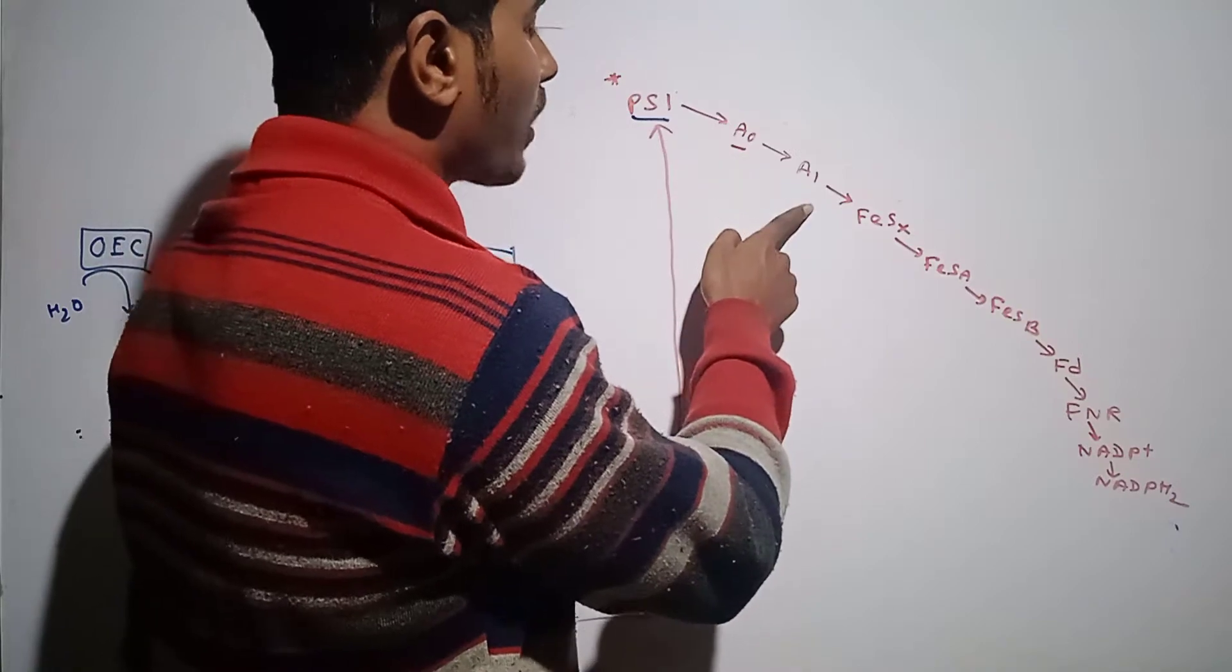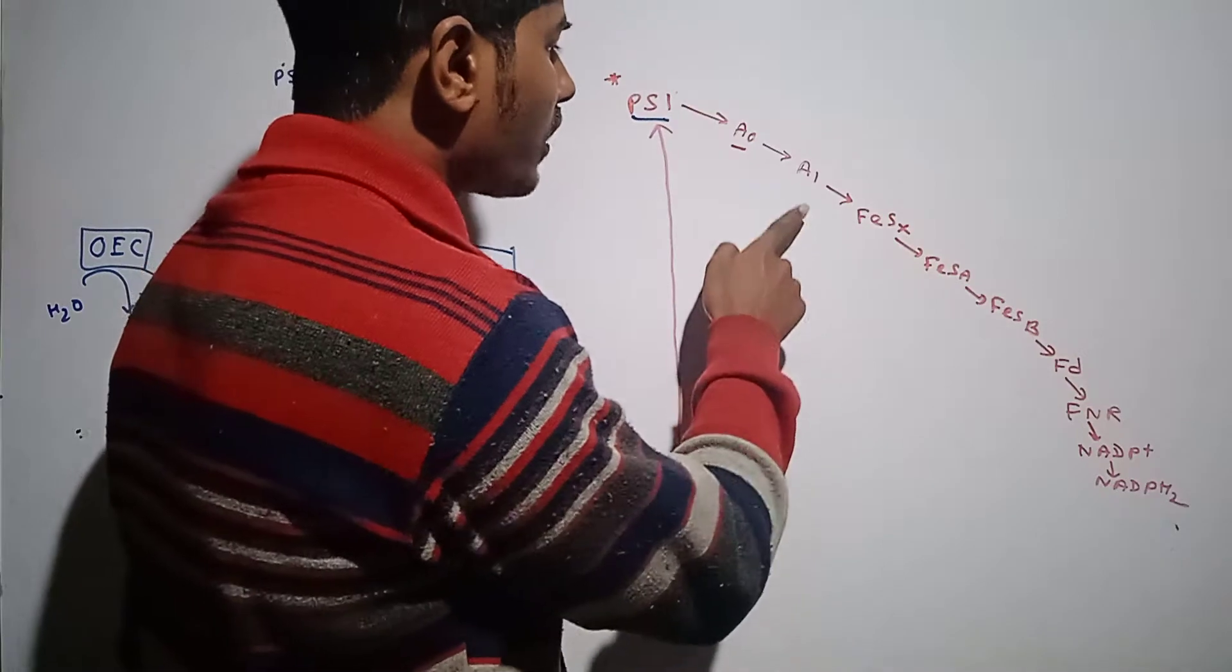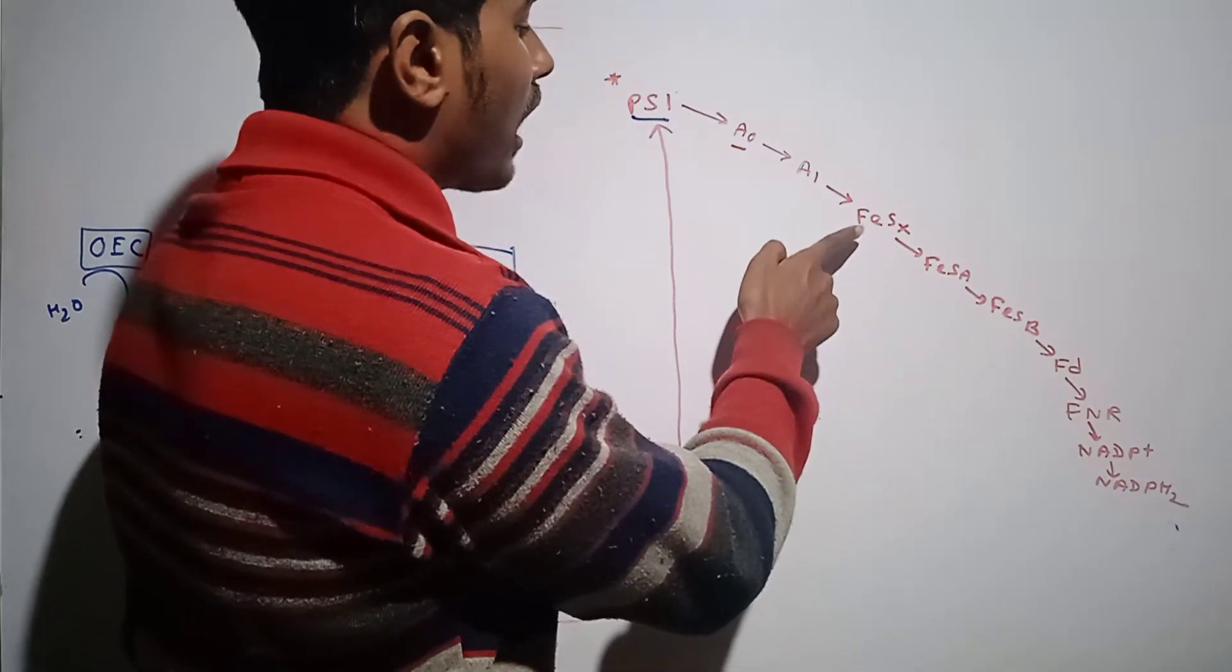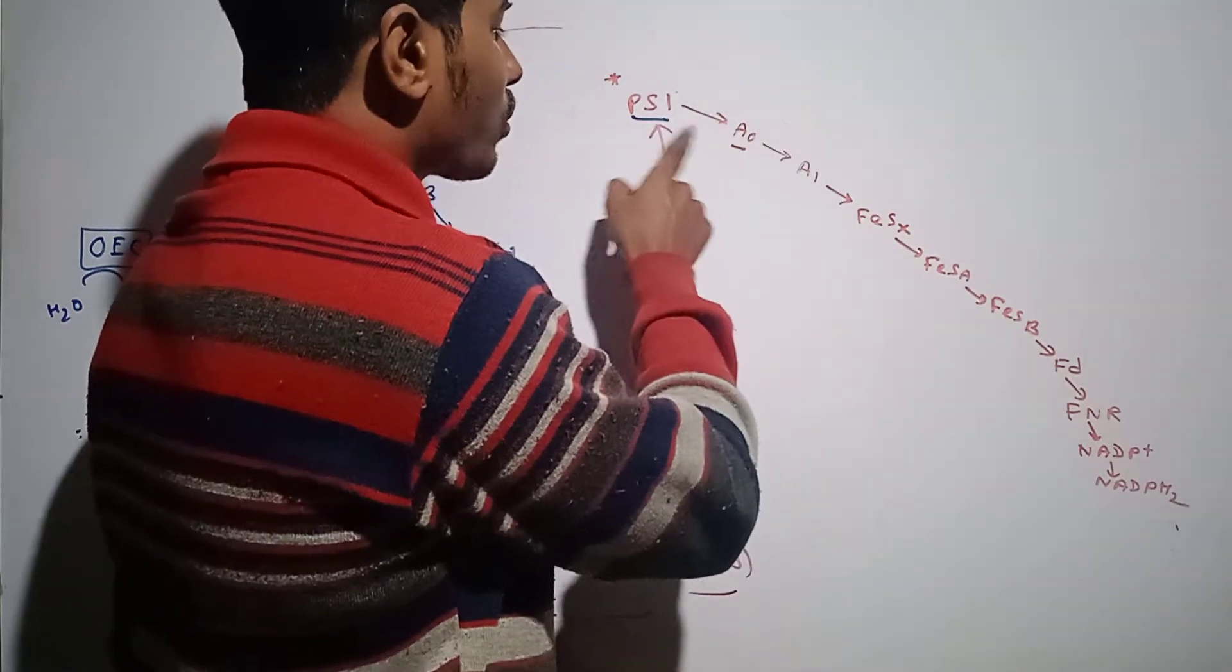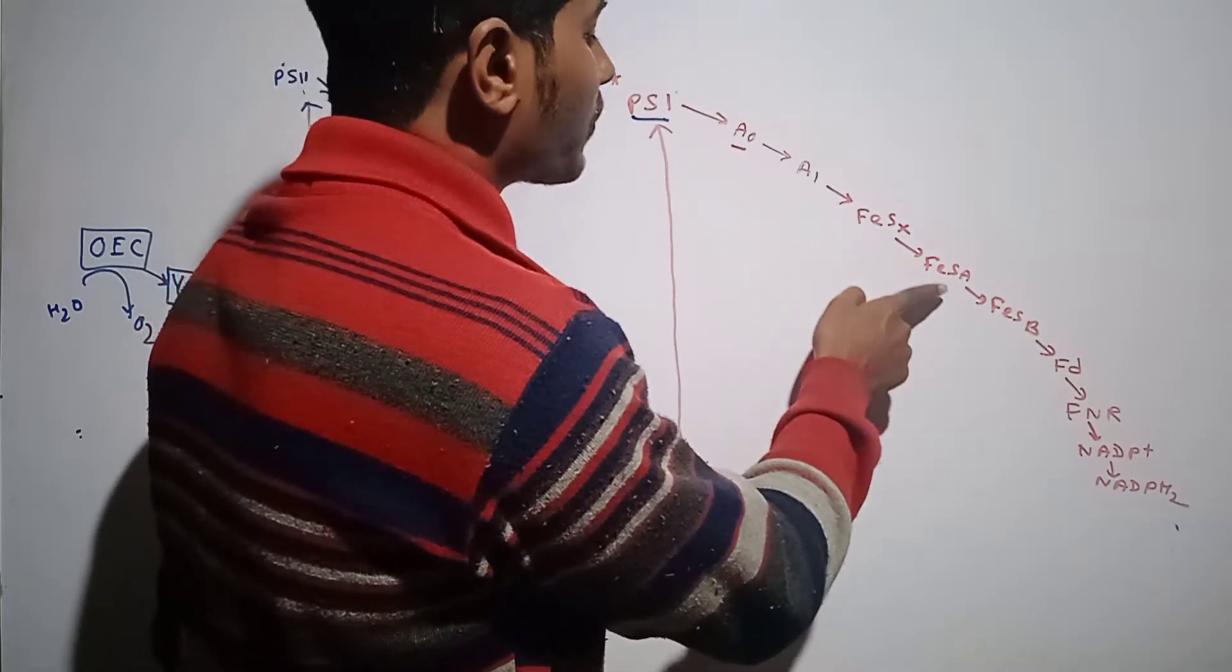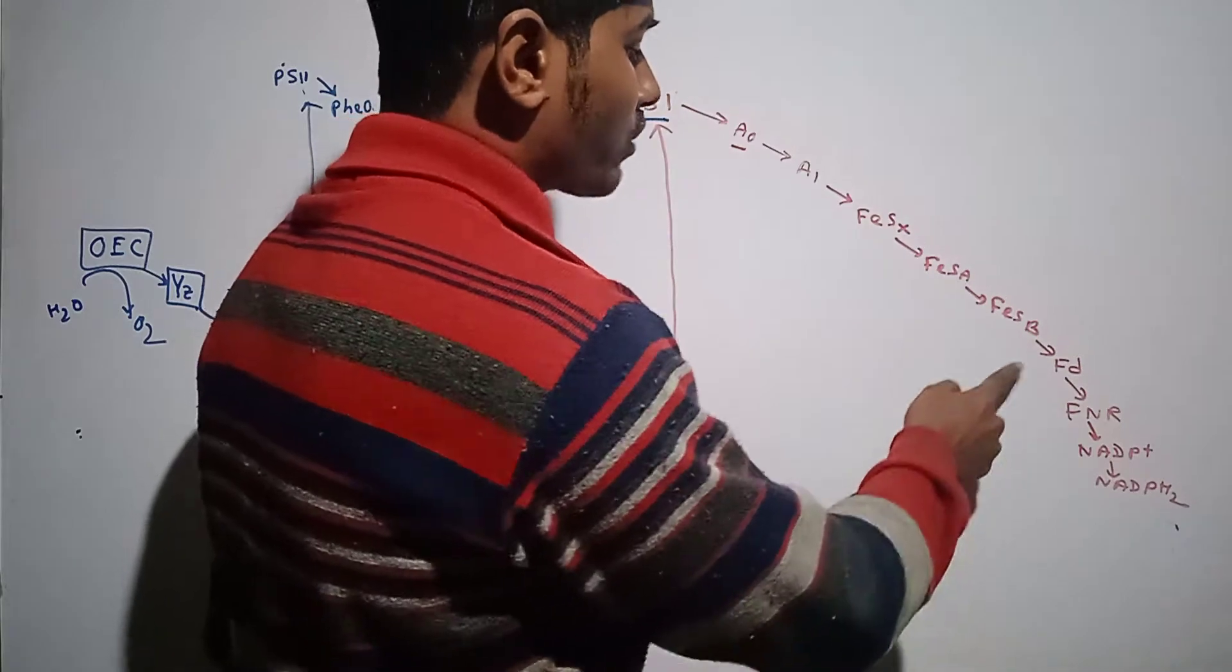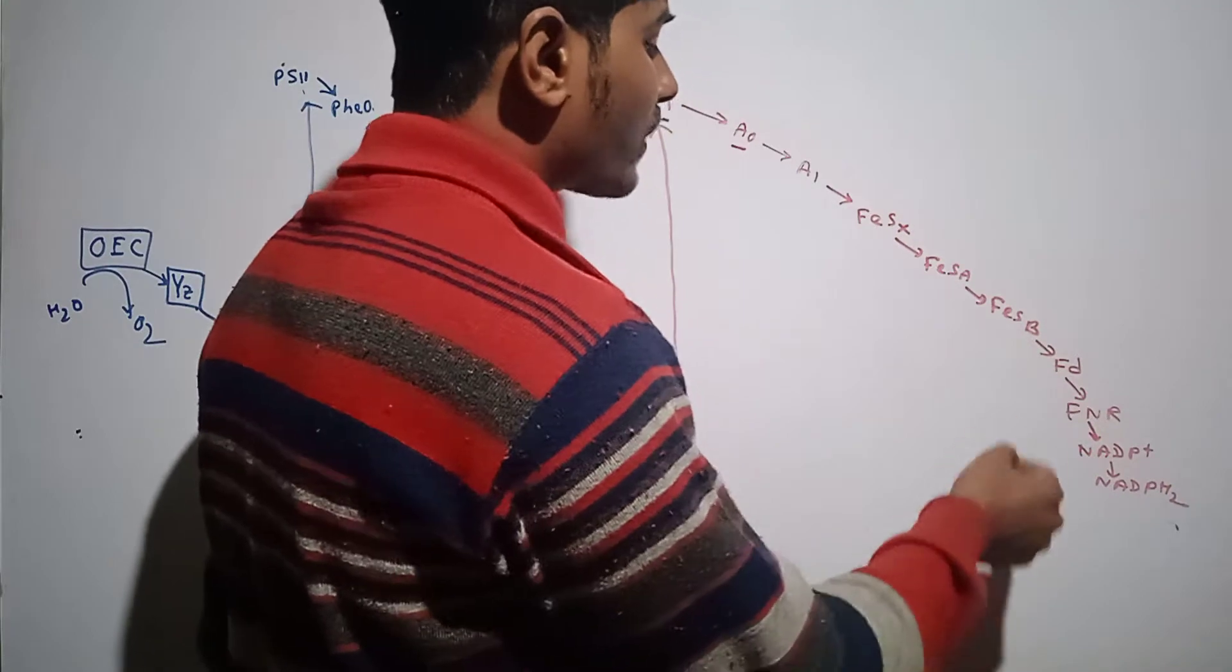The electron goes to a chlorophyll A molecule, A0, and after that it goes to A1, which is phylloquinone (the chemical name of Vitamin K). After phylloquinone, the electron goes from A1 to FeS-X, FeS-A, and FeS-B. FeS are iron-sulfur proteins. From FeS-B, the electron goes to ferredoxin, and from ferredoxin the electron goes to FNR, which is called ferredoxin NADP reductase.